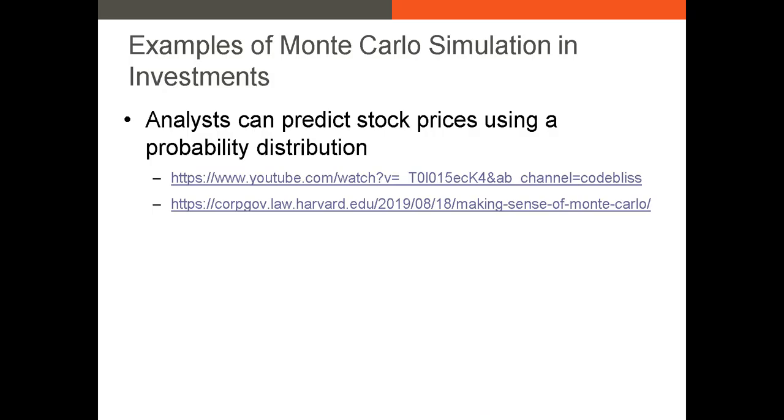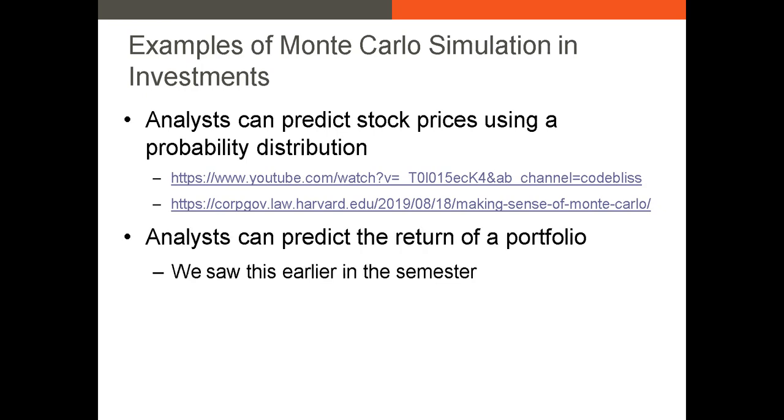In finance, we can use simulation to predict stock prices. We assume the return is a random variable that follows a normal or log-normal distribution and has a certain mean and standard deviation. We can also use simulation to predict the return, or the VAR, of a portfolio. For this, we assume an expected return and volatility for each asset in the portfolio, and we might also assume that certain assets' returns are correlated. For VAR, we then identify the first or fifth percentile of the simulated histogram.